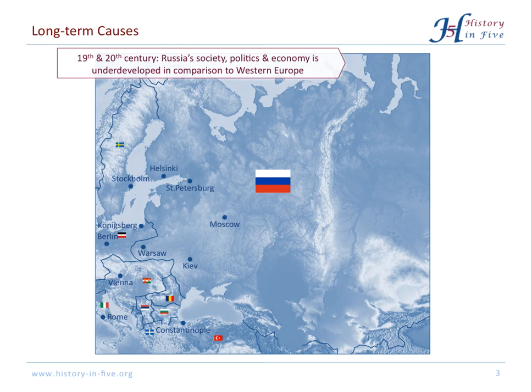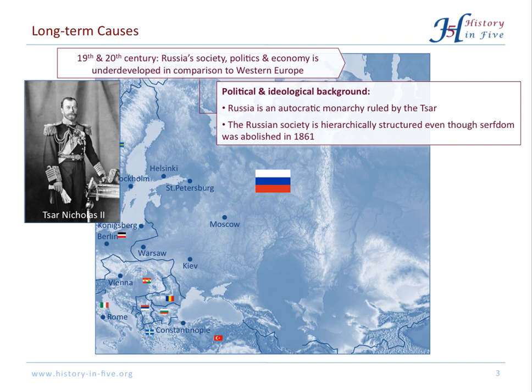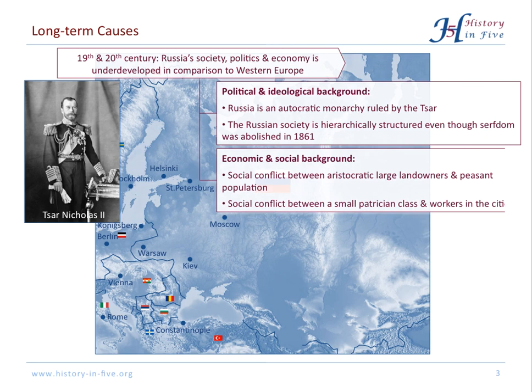Russia was a hierarchically organized system. You can see this in the fact that serfdom was abolished only around 50 years earlier. At the top of this hierarchy there was the Tsar who ruled as an autocratic monarch. So there was a conflict between aristocratic landowners and poor peasants in the countryside, and in the cities there was a small class of industrialists and a large class of relatively poor workers.